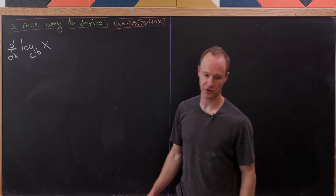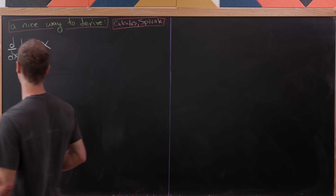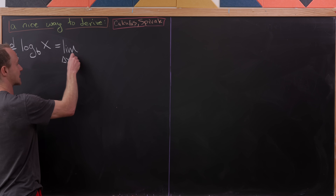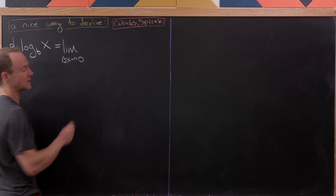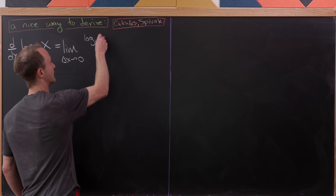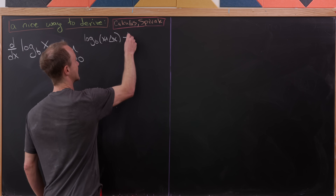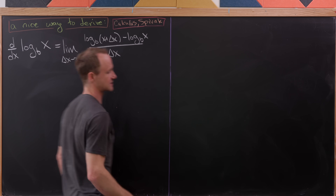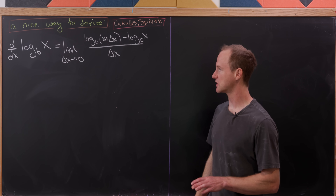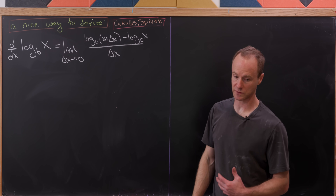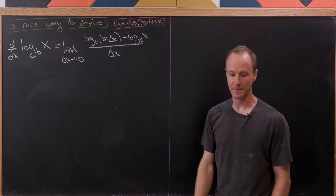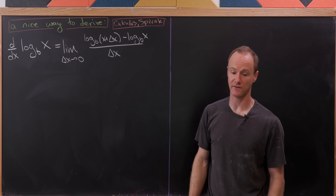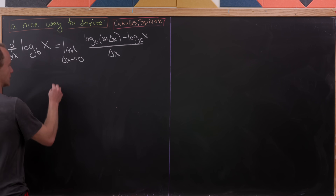Let's start with the definition of the derivative for log base b of x. We write this as the limit as Δx approaches 0 of log base b of (x + Δx) minus log base b of x, all over Δx. Now let's use logarithm rules to push the numerator together and bring the denominator into the exponent.